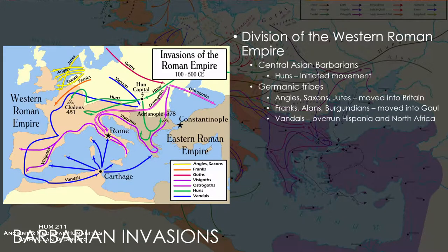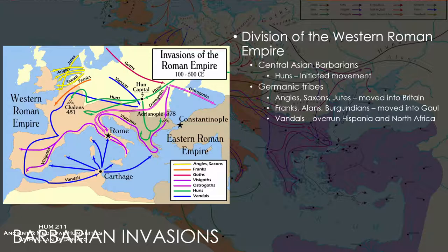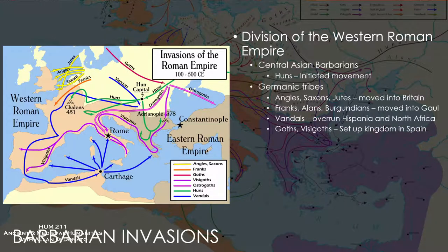The Vandals swept down, overran Hispania — Spain — and went into North Africa where they formed a kingdom. We talked about Justinian's reconquest of North Africa from the Vandals when we discussed the Byzantine Empire. The Goths, particularly the Visigoths, are the ones that ultimately attacked the Eastern Empire, killed Emperor Valens in 378, and moved on into Rome by 410, sacking the city.